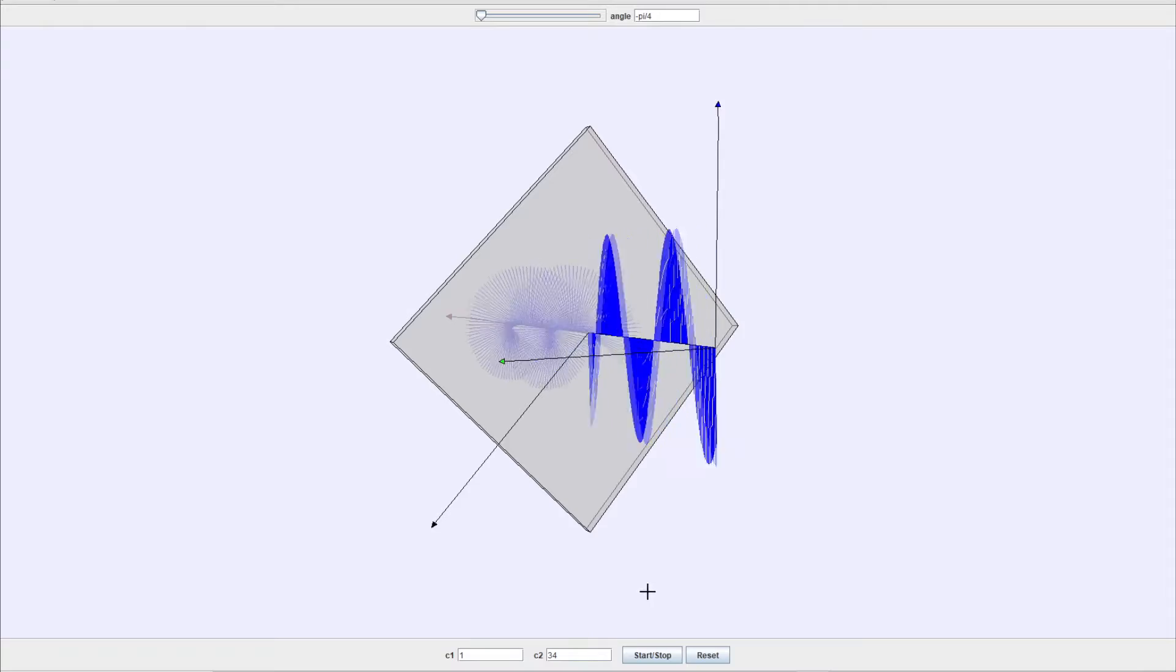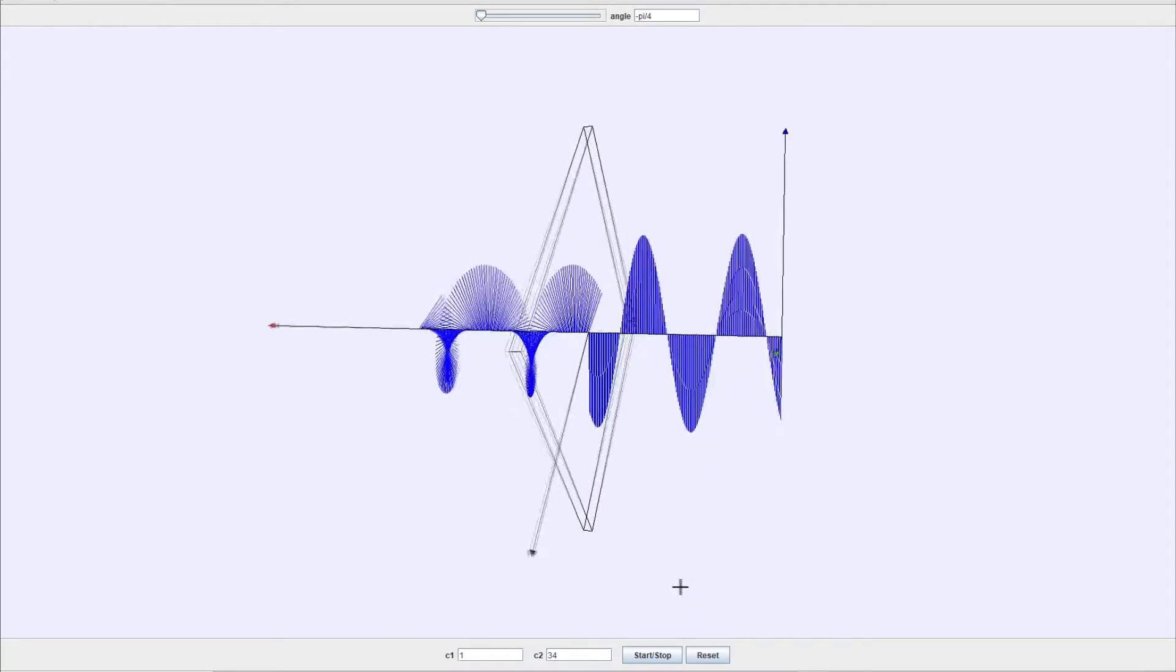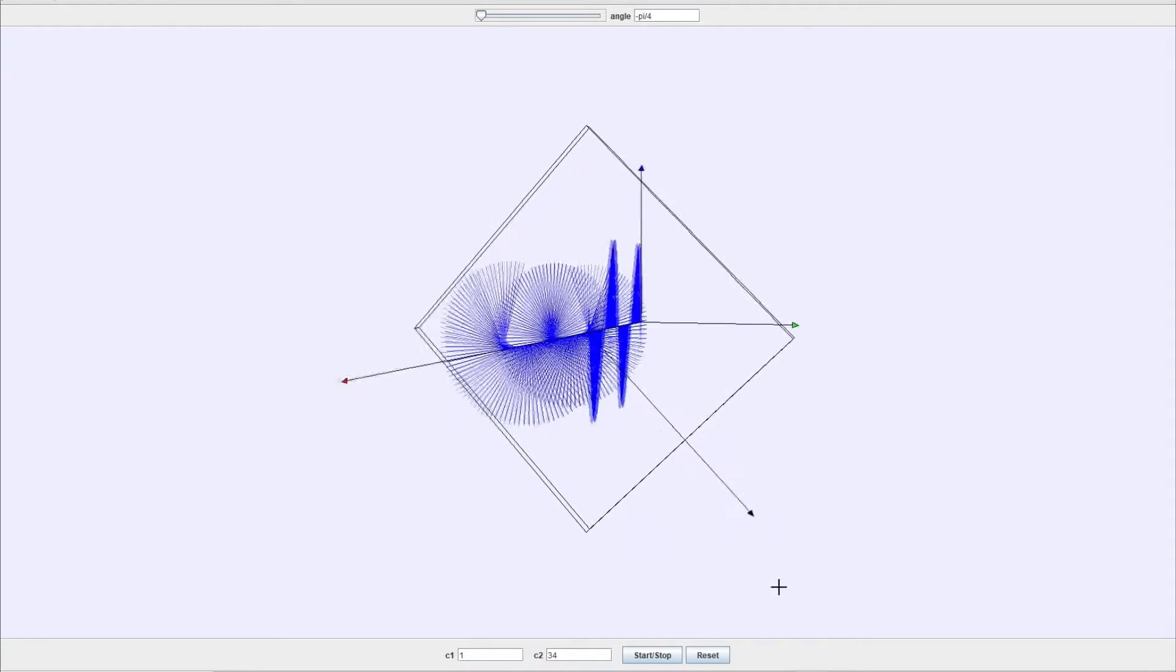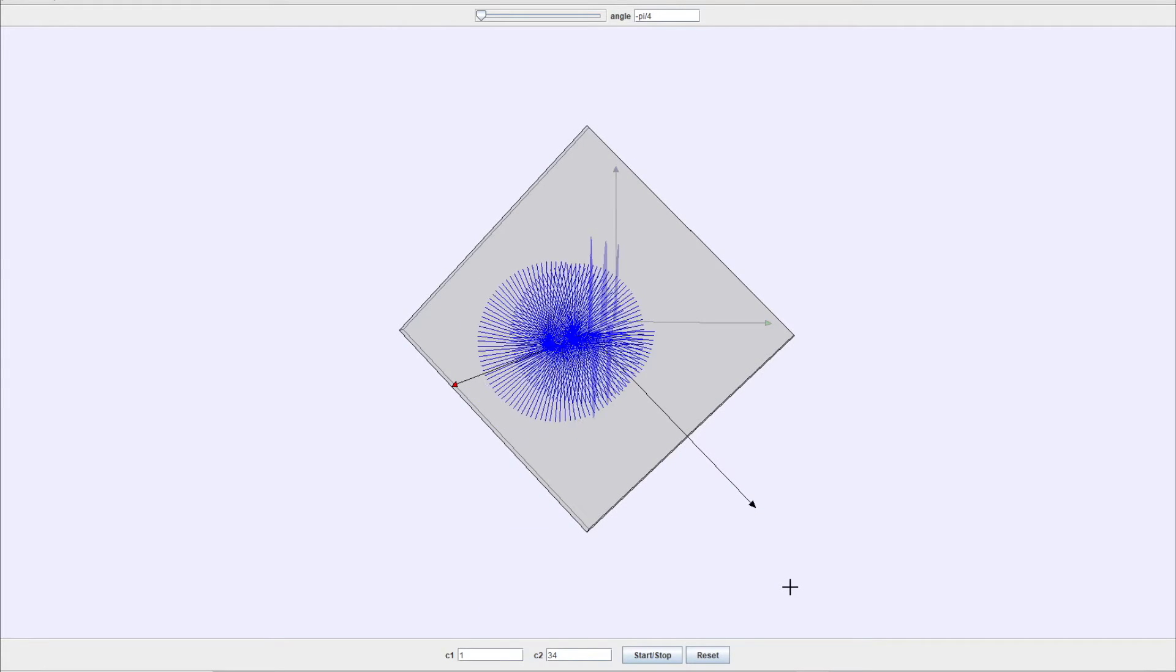Quarter wave plates also work in reverse, so it can take in circularly polarized light and put out linearly polarized light.